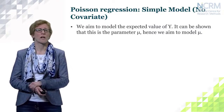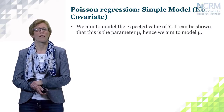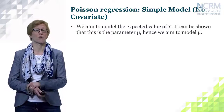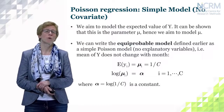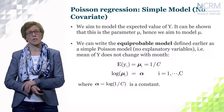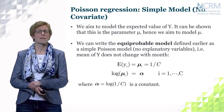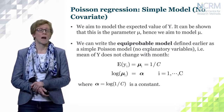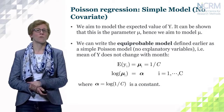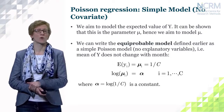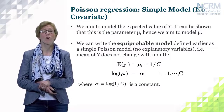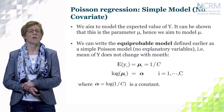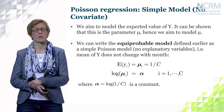For the simple model, we aim to model the expected value of Y, which is the parameter mu. The equiprobable model is formalised as: the expected value of Y equals 1 over C, because we assume equal probability across weekdays. Using the link function, the log of mu equals a coefficient alpha, which is estimated as part of the model — specifically alpha equals log of 1 over C in this case.